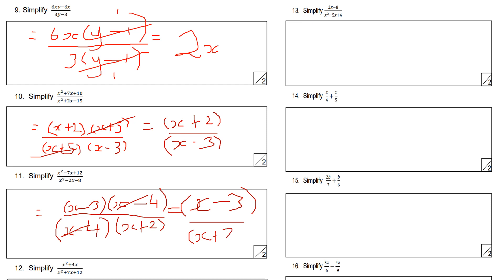Simplify this next algebraic fraction. Factorise the top: take out x as a common factor to get x(x plus 4). On the bottom, factorise the quadratic to get (x plus 3)(x plus 4). Cancel top and bottom by (x plus 4), giving x over (x plus 3) as the final answer.